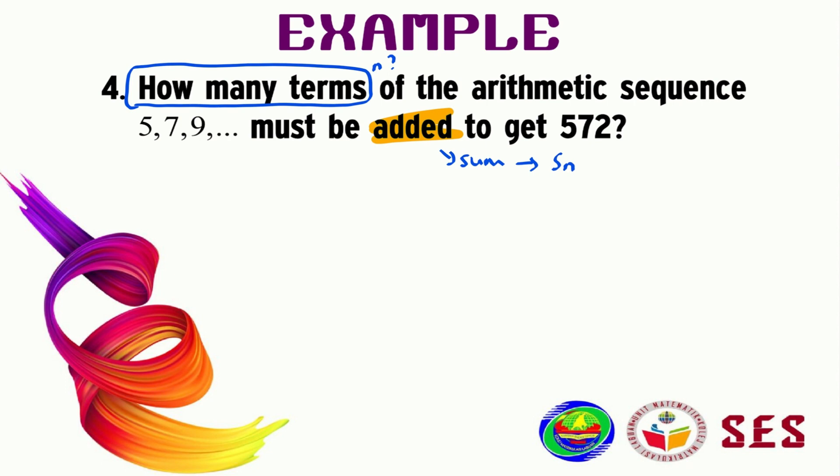So basically, this 572 is the Sn. What we have been given already in the question is of course a equals 5, d equals 7 minus 5 equals 2, and our Sn equals 572. For this case we need to calculate the value of n.